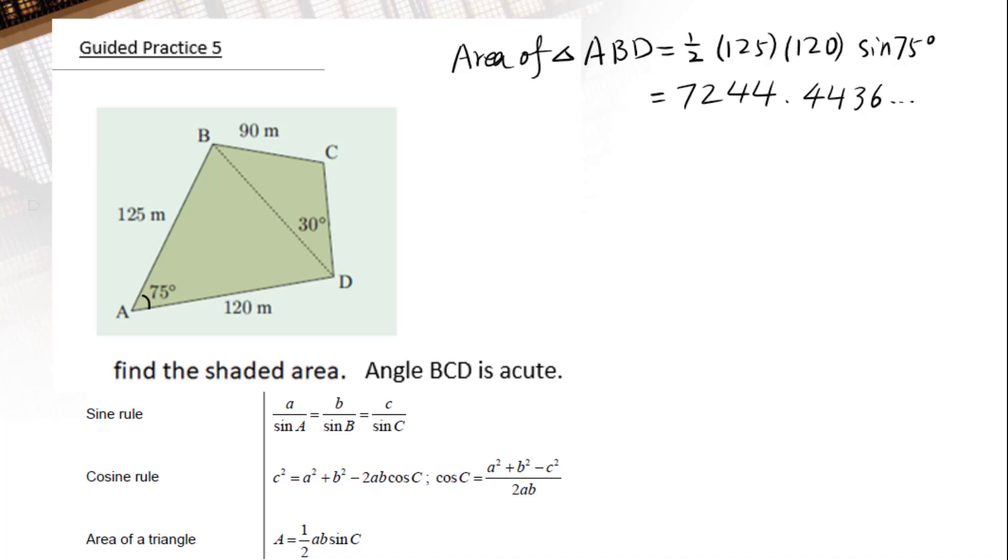If we want to figure out the area of triangle BCD, we have to figure out the size of BD because BD is the common side of these two triangles. For BD, since 75 is the included angle, we will use cosine law to figure out BD.